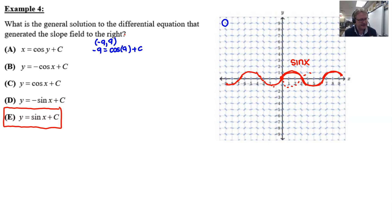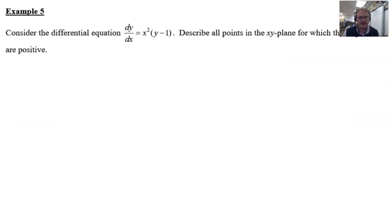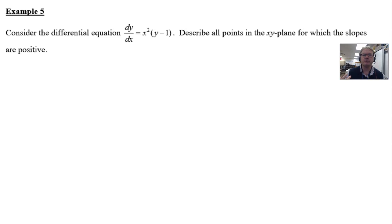All right, let's take a look at our final example, number five. This is really more of a topic 7.4 because we're really reasoning with slope fields here. It says, consider the differential equation—well, I will—dy over dx equals x squared times (y minus one). Describe all the points in the xy plane for which the slopes are positive. Wow. Okay. Does that mean that we have to sketch all these slope fields? That could be a lot of work. And I don't know about you, but I'm not seeing a graph just to sketch them on. So no, we're not going to have to do that. Instead, we're going to have to do exactly what the topic says. And that's reason.